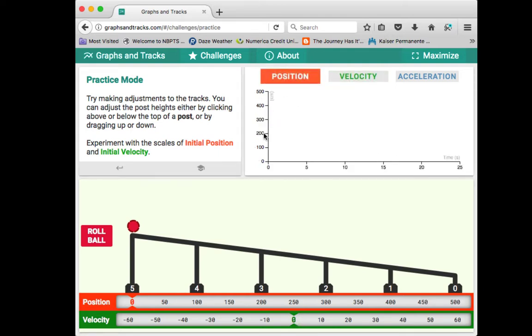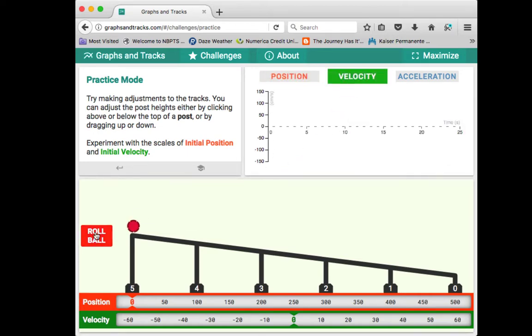If I want to see what the position graph looks like, I click roll ball and it produces a curved line, very much like we got from our lab. The velocity graph would be a straight line with a positive slope, just like I'd expect. The acceleration graph would be a horizontal line because it's constantly accelerating.